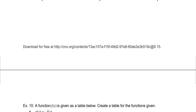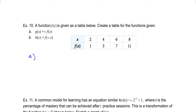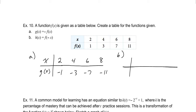For our next example, we look at a table and determine reflections. Part a: g of x equals negative f of x. The inputs remain the same, but each output is multiplied by negative 1, giving negative 1, negative 3, negative 7, negative 11. Part b: f of negative x — what changes are the inputs, multiplied by negative 1. The outputs remain 1, 3, 7, 11, and the inputs become negative 2, negative 4, negative 6, and negative 8.